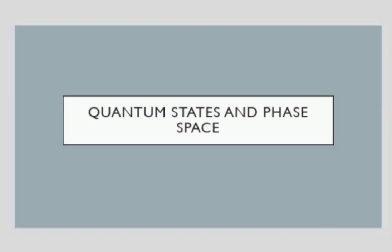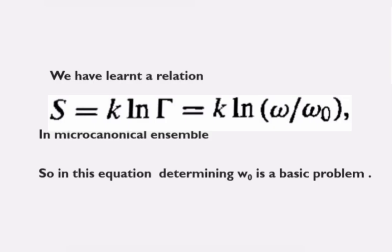Hi all, today we are going to discuss quantum states and phase space under the second module. While we were studying about the micro-canonical ensemble, we came across a thermodynamic relation: S is equal to k ln(Γ), which is equal to k ln(Ω / Ω₀), where Ω is the volume of phase space.